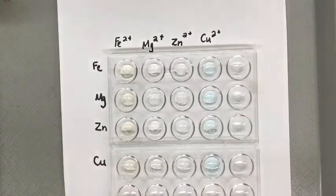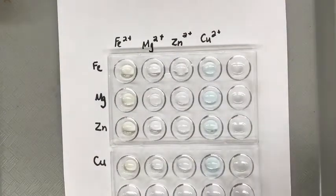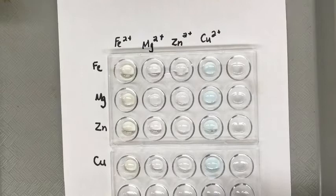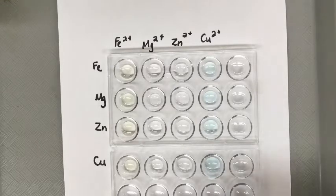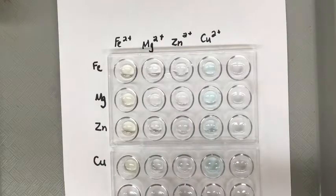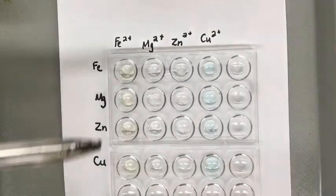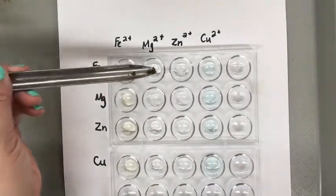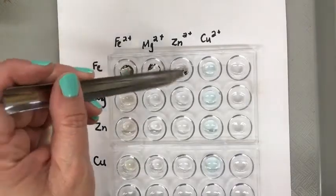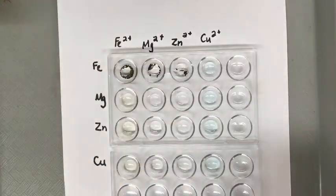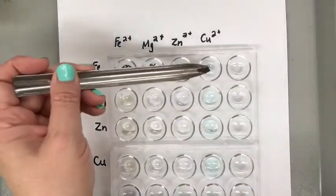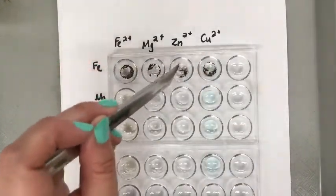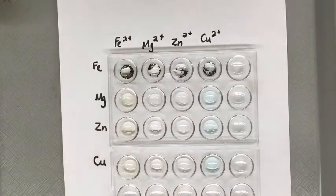Now I'll add some iron to each of the top row. We'll just add a few grains each. Last one, there we go. So we'll let that sit.